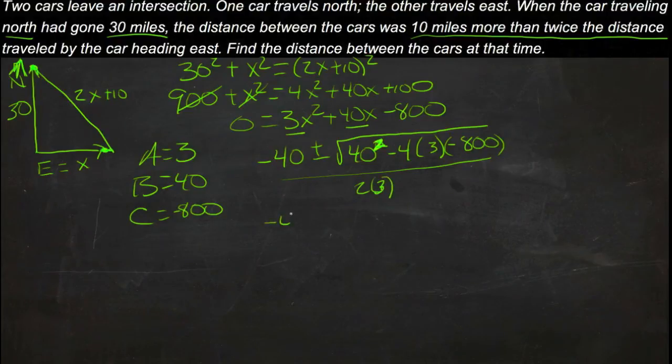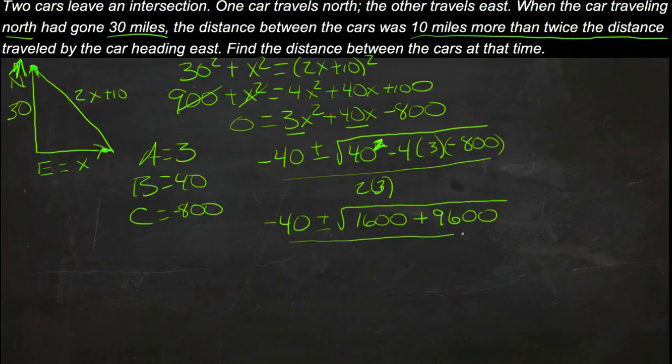So now we have negative 40 plus or minus square root of 1600 minus 4 times 3 times 1800, that's what, 9600 minus negative 9600, so plus 9600 over 6.